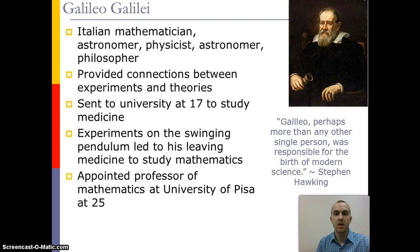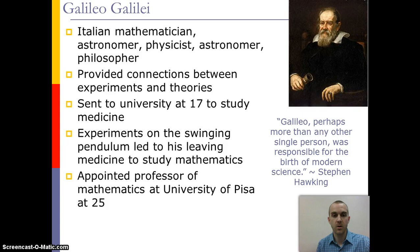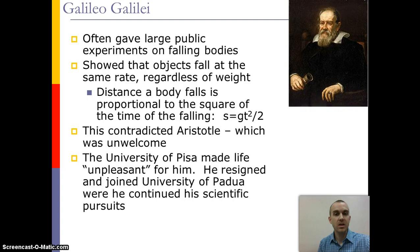Another famous astronomer, scientist, and mathematician of the time is Galileo, who is a very prominent figure. He is one of the main founders of the concept of providing experiments to explain a theory. He was sent to learn medicine, but it was the concept of a swinging pendulum that led him to leave medicine and study mathematics instead. He was appointed a mathematics professor at age 25 and often performed public experiments on falling bodies, demonstrating that bodies fall at the same rate regardless of weight.